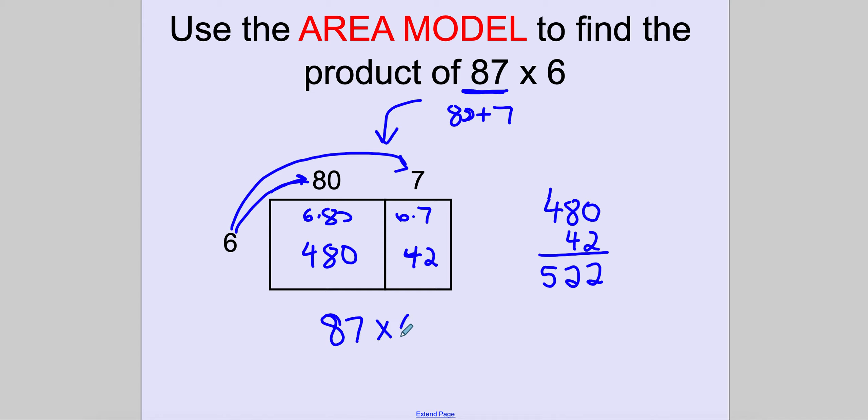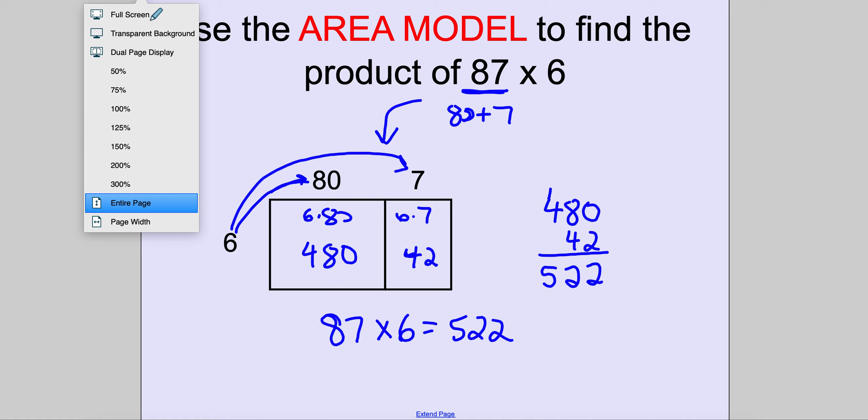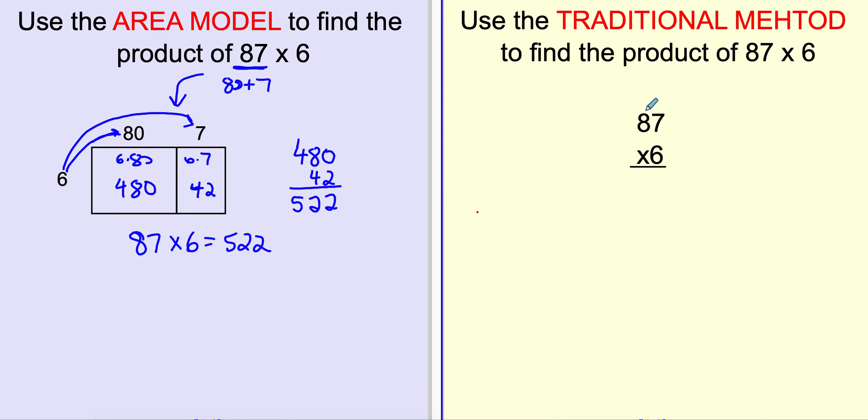So 87 times 6 equals 522. Now let's also take a look at this using the traditional method. In the traditional method, I'm going to rewrite my numbers this way.